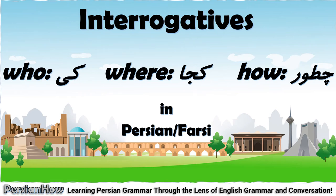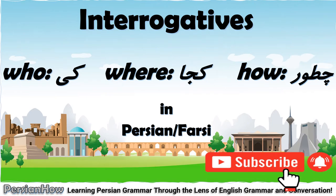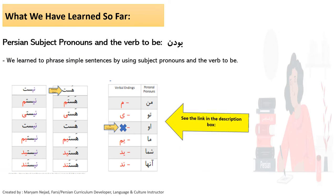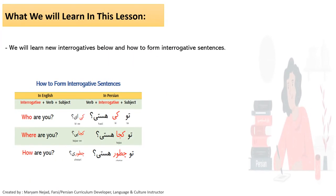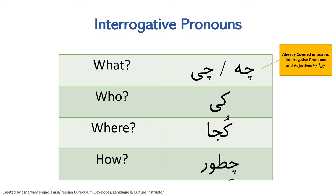Hi everybody, salam, welcome to my channel. In this lesson we are going to learn three new interrogatives: who, where, and how. In the previous lesson we learned about the subject pronouns and the verb 'to be' in Persian, and now in this lesson we are going to learn more interrogative pronouns so we can ask and answer questions.